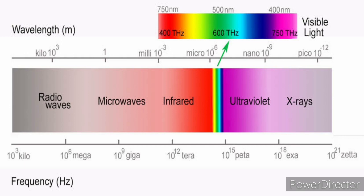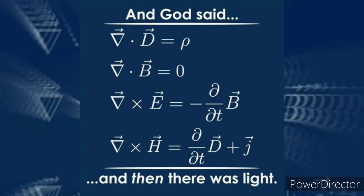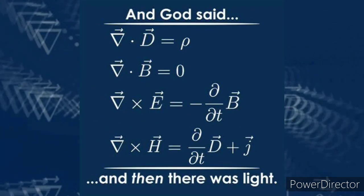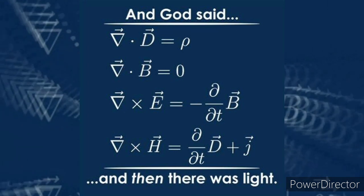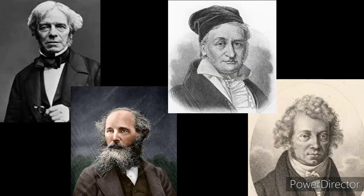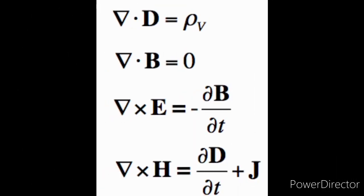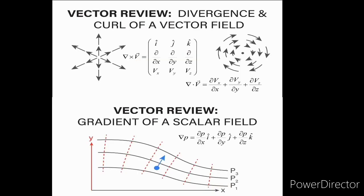That would have been impossible without these four beautiful equations encapsulating the whole of electromagnetism — Maxwell's equations. Let's take a moment to appreciate these genius minds. Looking into the equations, we find our divergence and curl operators. You might be familiar with the equations used to calculate them mathematically, but let's try to understand the physical intuition behind them.